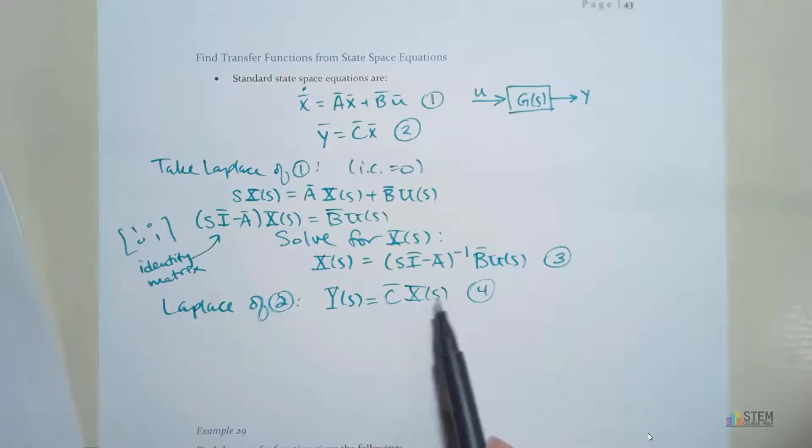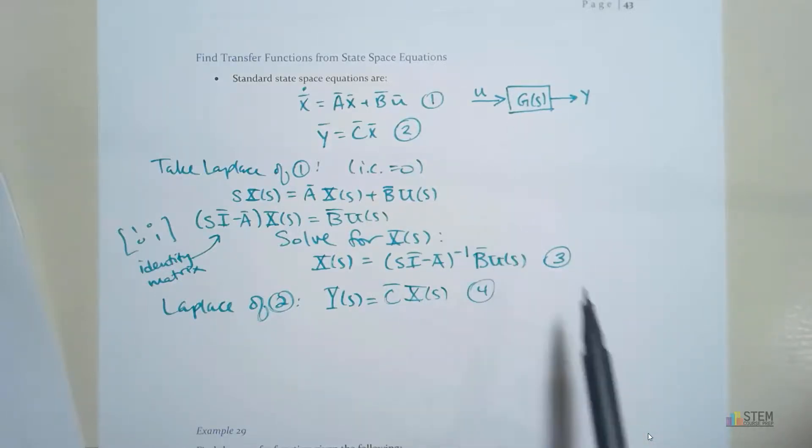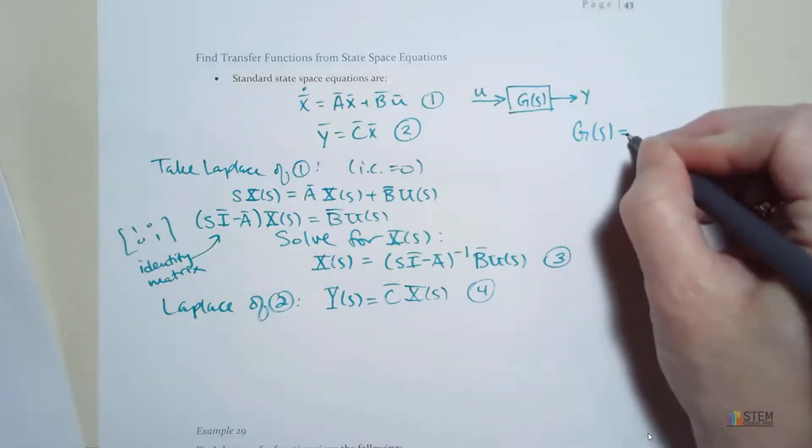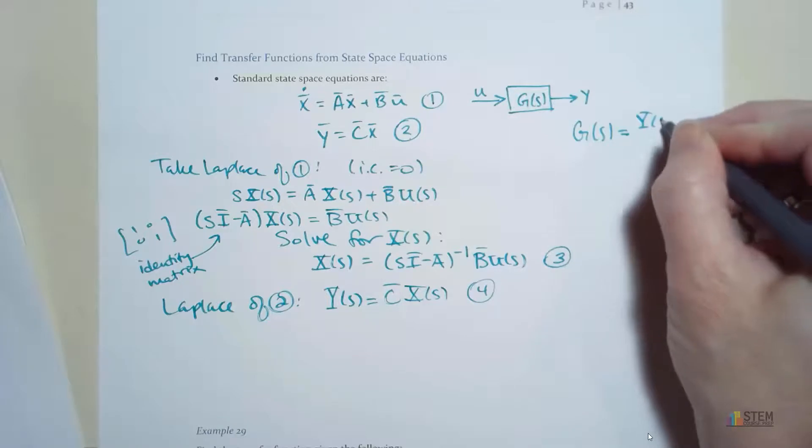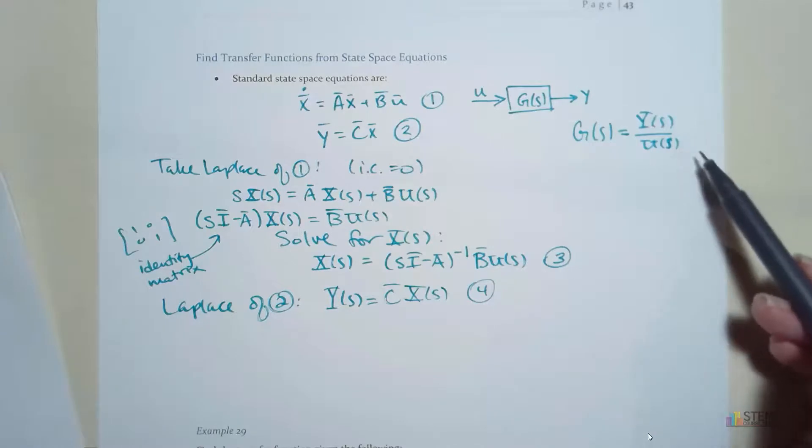And let's think about what we're looking for. We want the transfer function here. Now remember the transfer function is output over input. So this G of S is going to be Y of S over U of S. Notice there is no X in here at all.